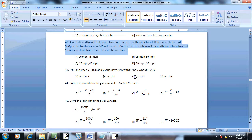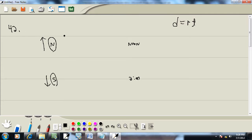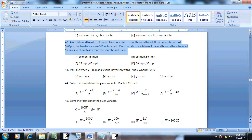At 5 p.m. the two trains were 315 miles apart. So total distance between these trains is 315.